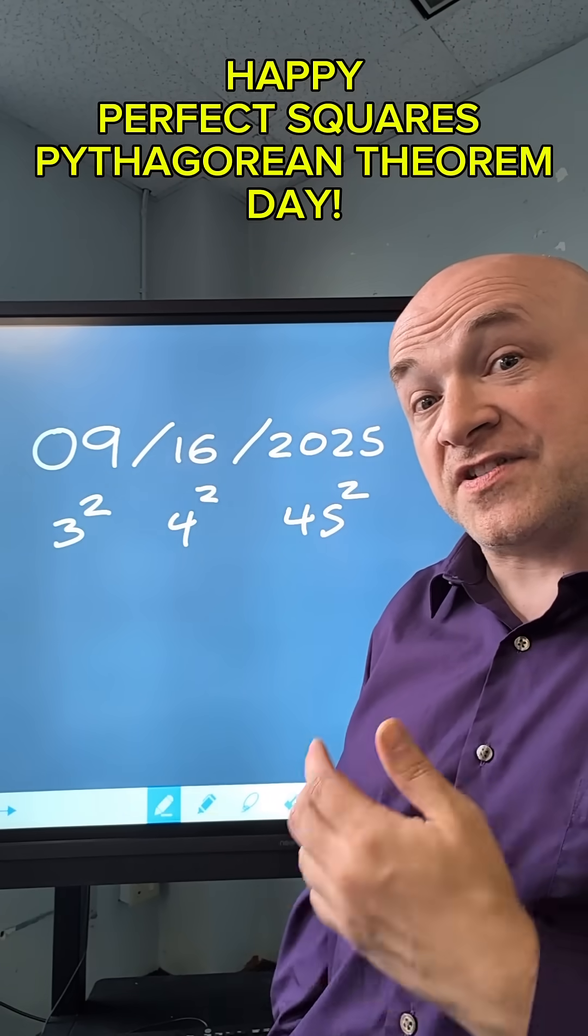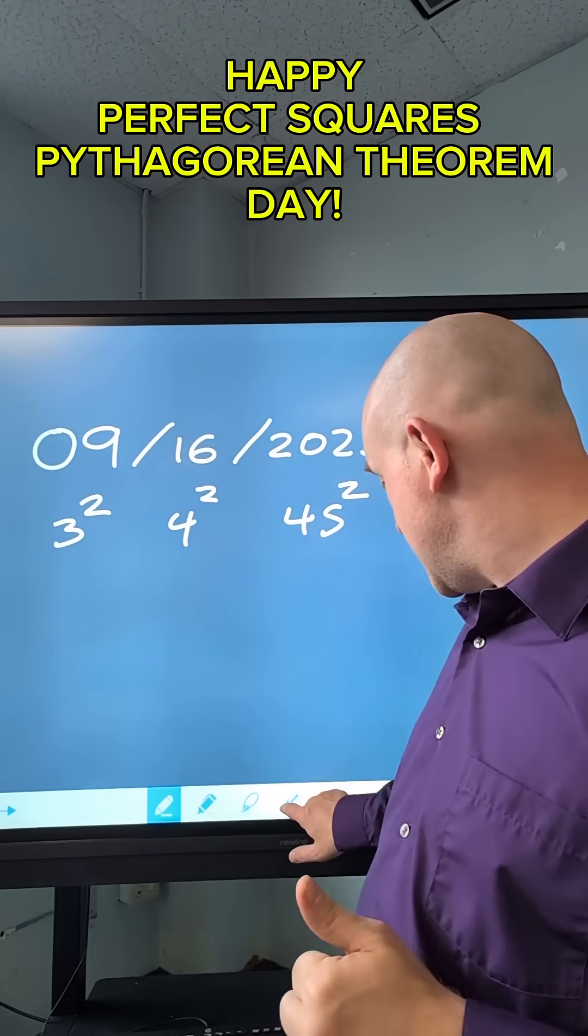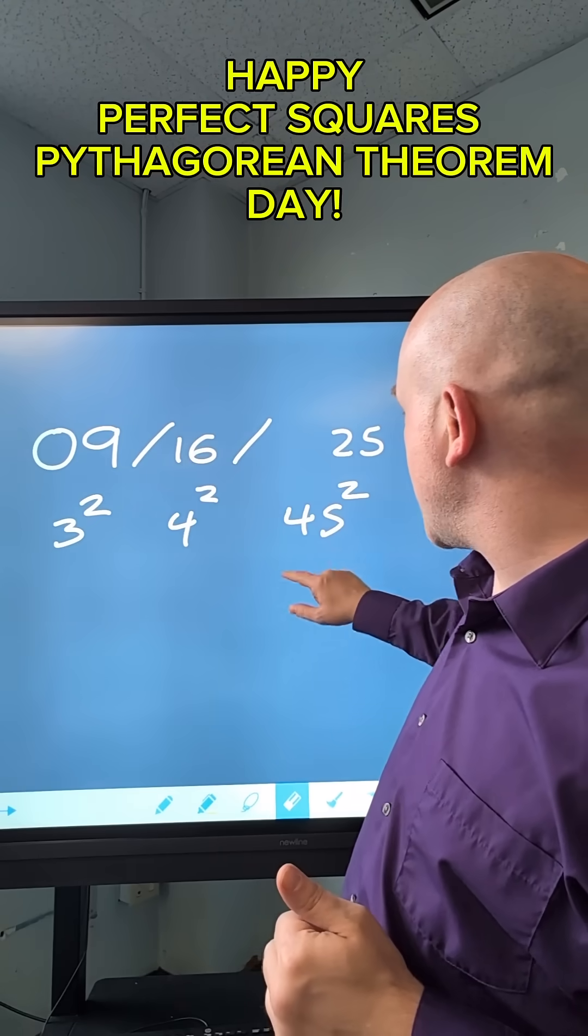But as it turns out, not only is today Perfect Squares Day, but it's also Pythagorean Theorem Day because if you drop the 20 from 2025...